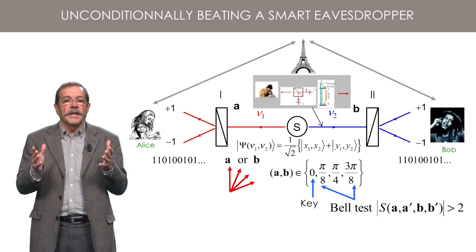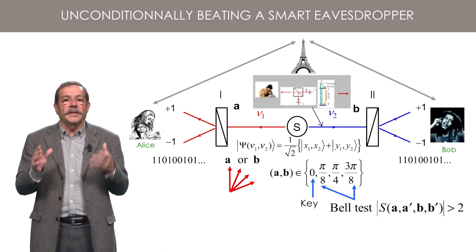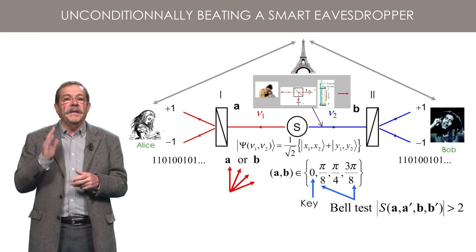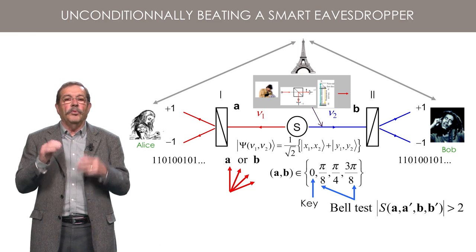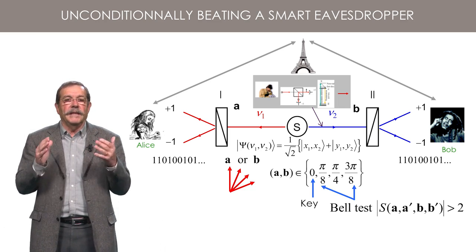That is to say, a convex sum of products of terms associated with each polarizer. So, because of the presence of the eavesdropper, Alice and Bob will find a value of S that never violates Bell's inequalities.